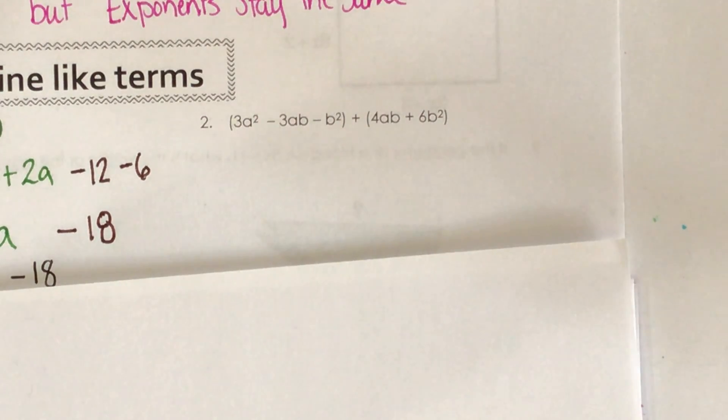So this polynomial, these two polynomials that we're adding together, they don't fall into the same category as what we've been looking at. And the reason is we have two variables: we have a's and we have b's. But as far as like terms go, things don't change at all.